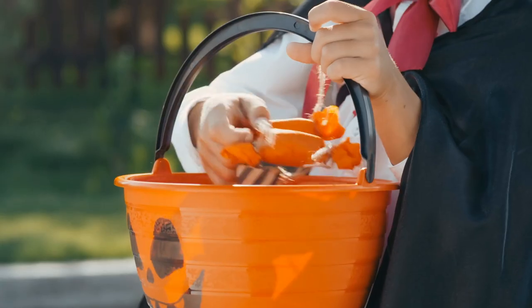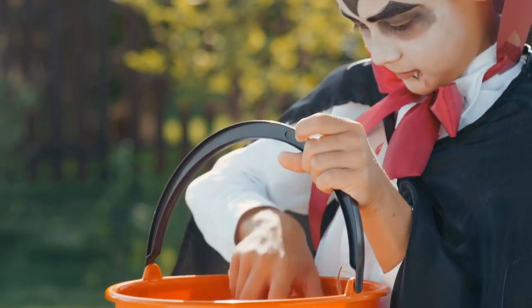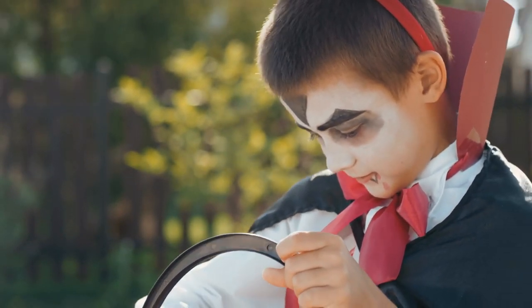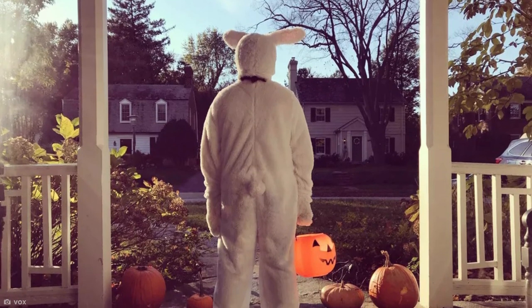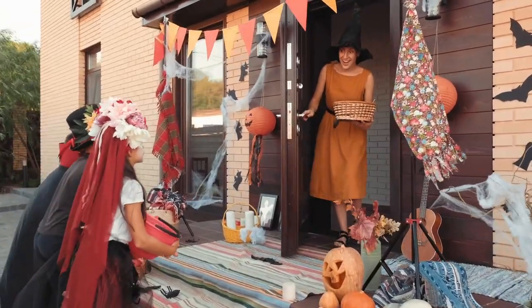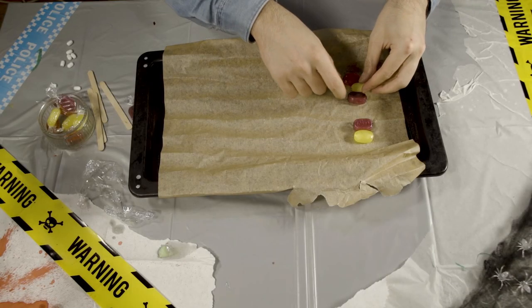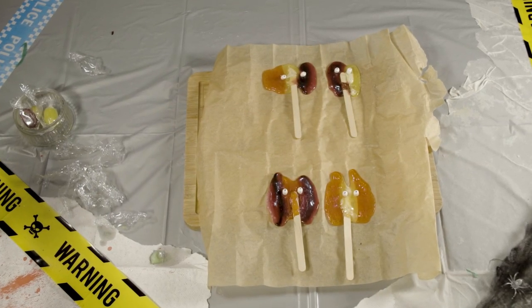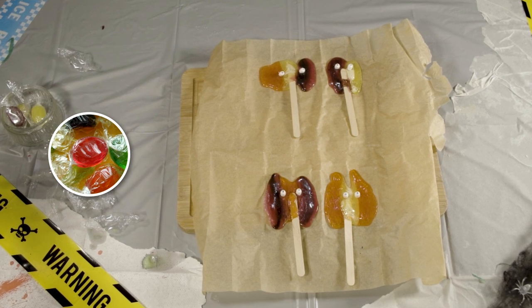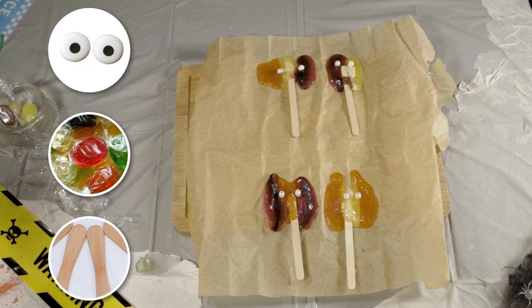Monster Suckers. Digging through your candy after a long night of trick-or-treating is one of the most exciting parts of Halloween when you're a kid. But when it's no longer socially acceptable to go knocking on strangers' doors, it's your turn to make Halloween as awesome as possible. So why not whip up your own treats like these super cool Monster Suckers? All you need are some Jolly Ranchers or other colorful hard-boiled candies, some candy eyes, and some lollipop sticks.